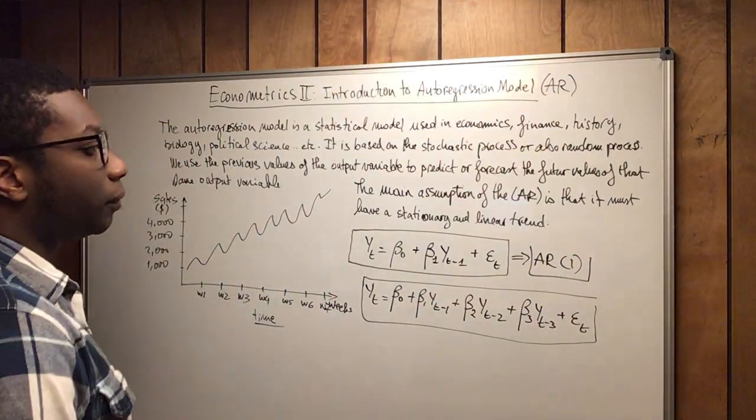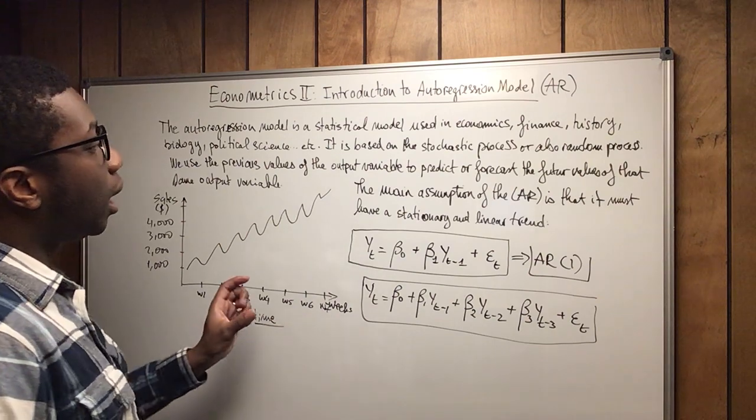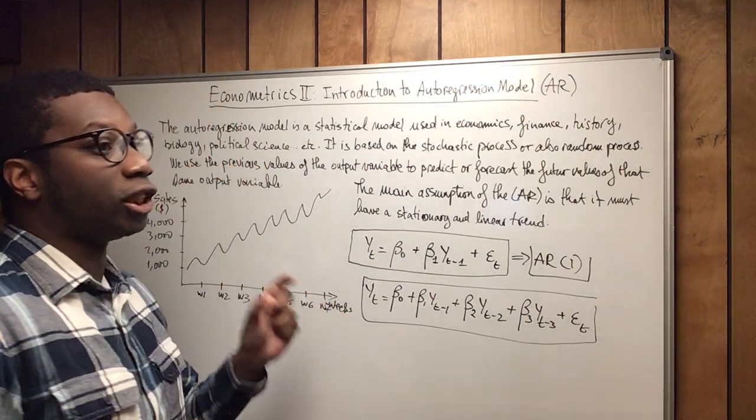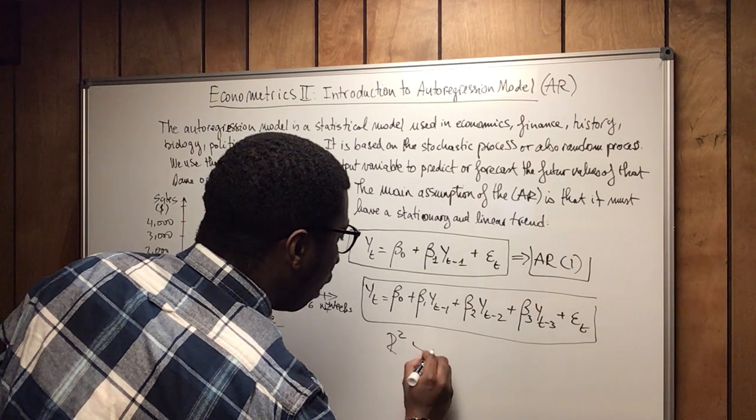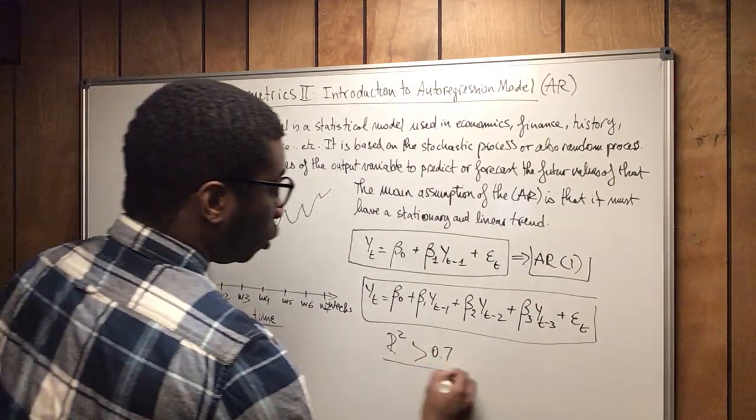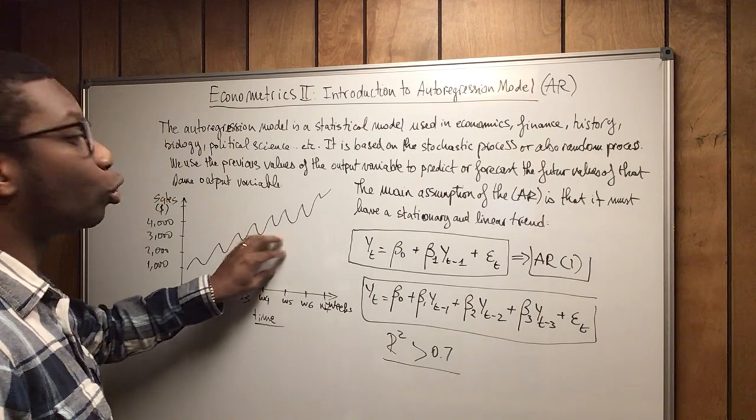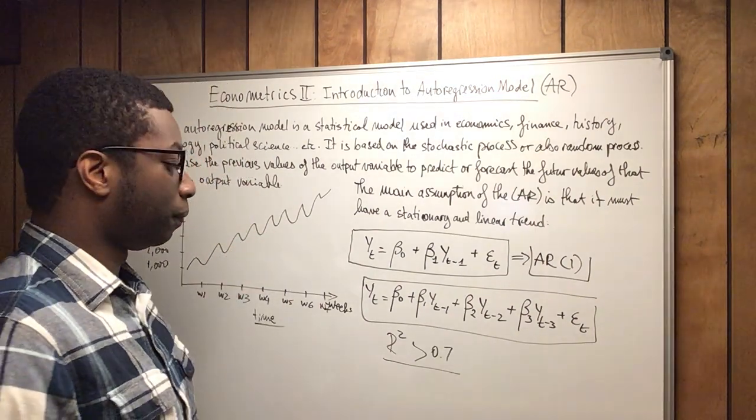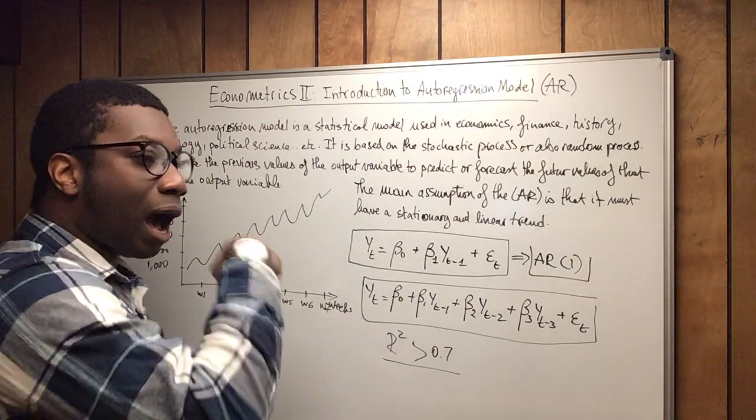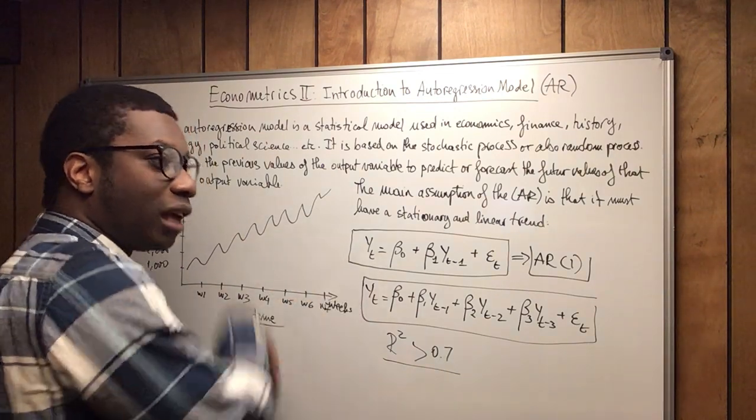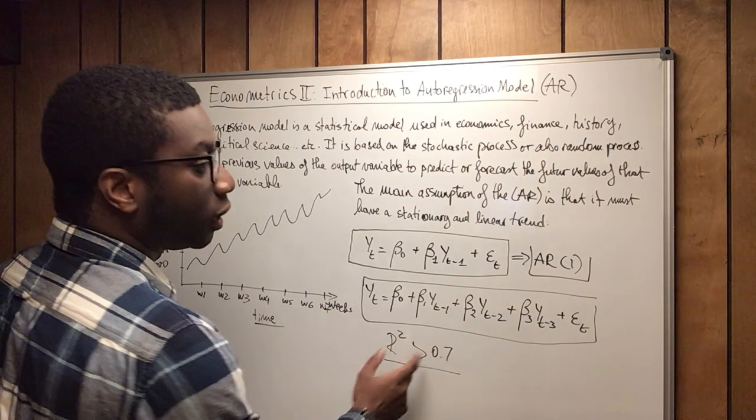And another particularity that I want to mention about the autoregression model is that if the correlation is strong, if the R squared is above 0.7, which is what you want for the autoregression model, if the R squared is above that, that means that you have a very strong model that you can rely on to make your predictions. That's the purpose of the autoregression model, because that's why we're using the same output variable.